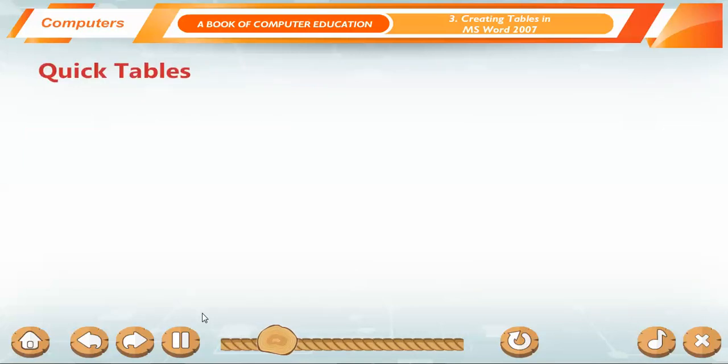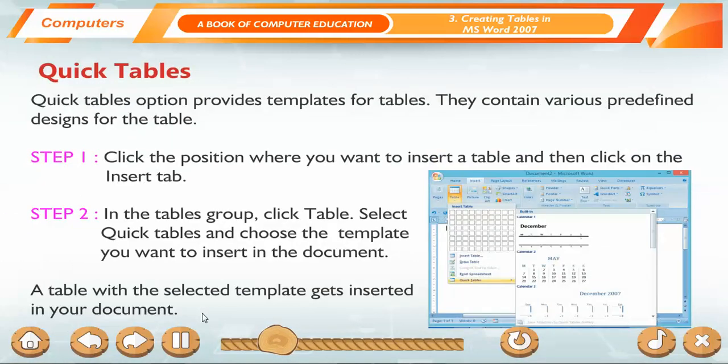Quick Tables. Quick Tables option provides templates for tables. They contain various predefined designs for the table. Step 1: Click the position where you want to insert a table and then click on the Insert Tab. Step 2: In the Tables group, click Table. Select Quick Tables and choose the template you want to insert in the document. A table with the selected template gets inserted in your document.